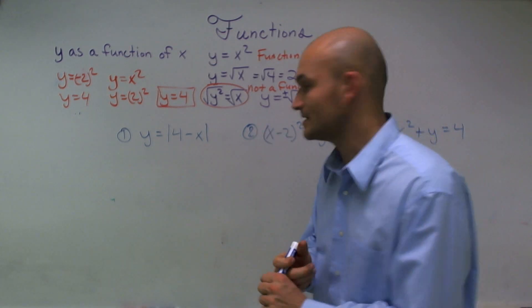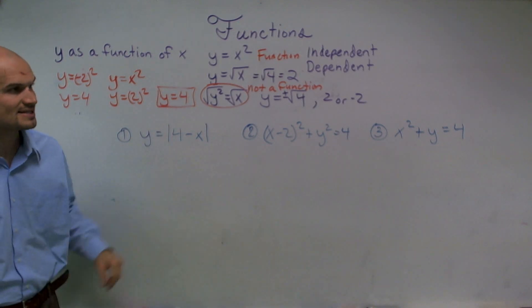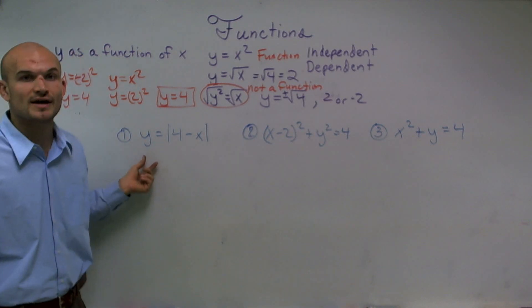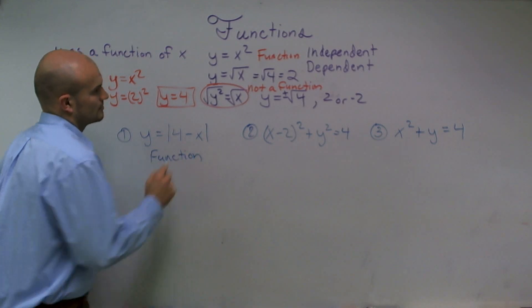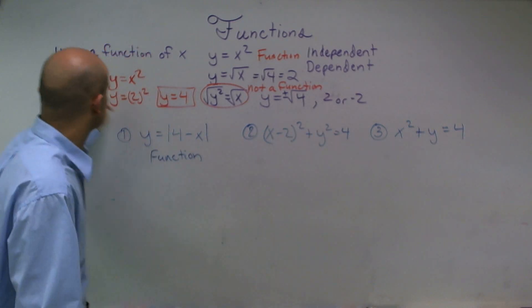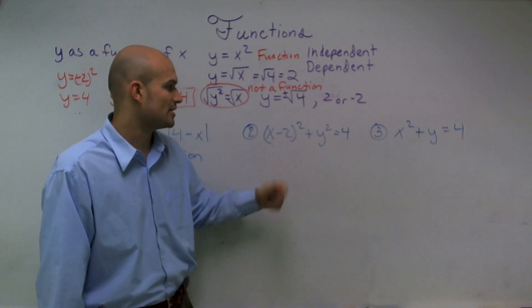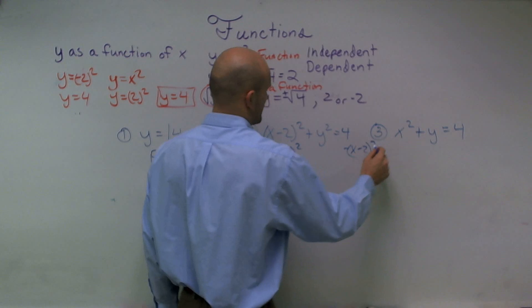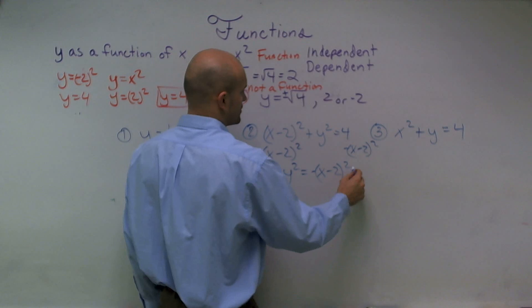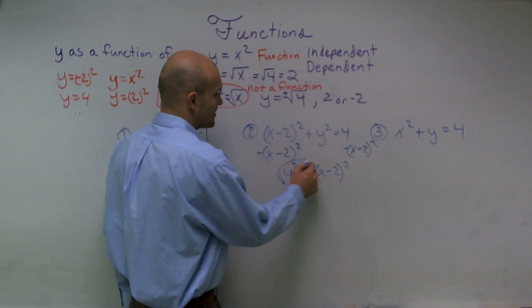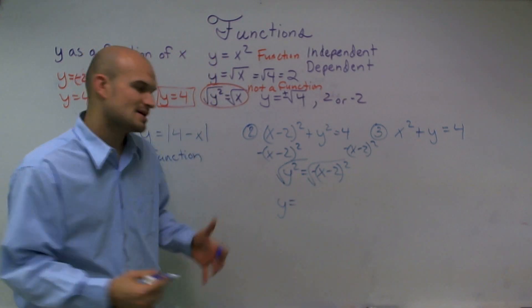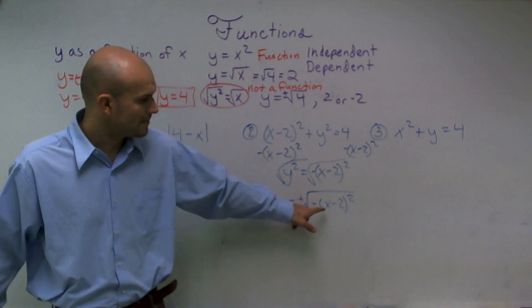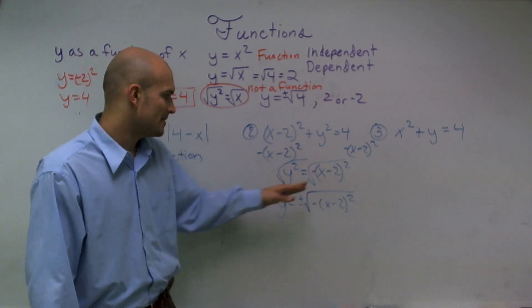Let's look at the answers. Here I have y equals the absolute value of 4 minus x. No matter what value I plug in for x, I'm still going to get a unique y value — therefore, this is a function. For the next equation, I first need to solve for y as a function of x. I subtract the x minus 2 squared term from both sides, giving y squared equals negative x minus 2 squared. To solve for y I take the square root of both sides, and whenever we do that we must include plus and minus. Therefore I have a positive and negative solution for y — this is not a function.